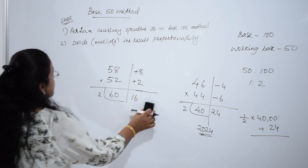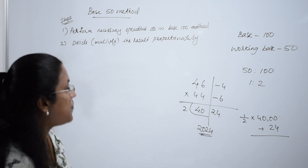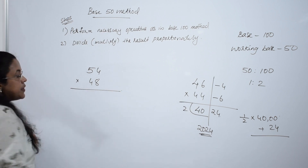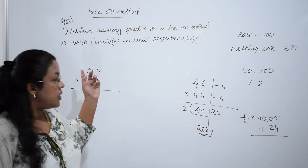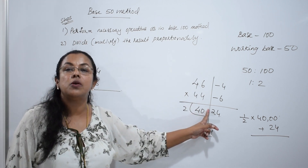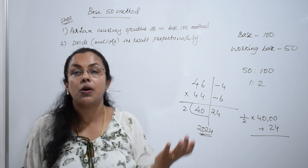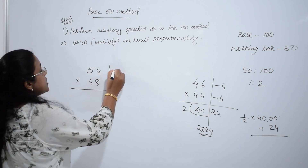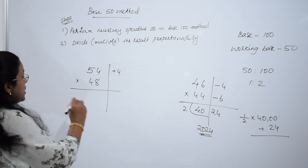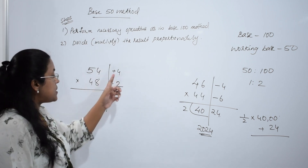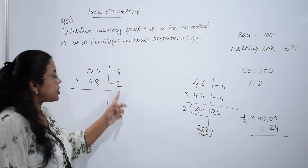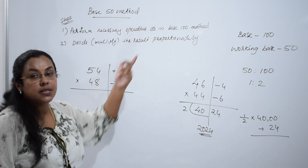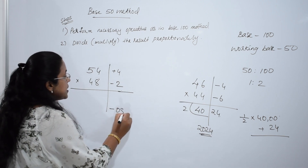We will do some more questions. Next: 54 into 48. This is the third pattern — one number above the base and one below. 54 is 4 greater than 50, and 48 is 2 less than 50. Write plus 4 and minus 2. Multiply vertically: 4 twos are 8. Plus 4 minus 2 gives minus 8. Since base is 100, write minus 08.